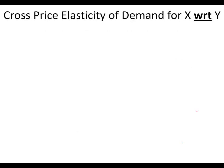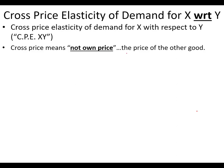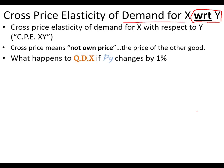The cross-price elasticity of demand for x with respect to y means that we have two goods, x and y. Cross-price means not the own price — if we just had price elasticity of demand for x, that would involve a percentage change in the price of x and the quantity demanded for x. But cross-price means not the own price, so if it's not x, that's why we have the other good y. With respect to y, we look at how y's price changes and the quantity demanded for x. What happens to the quantity demanded for x if the price of y changes by 1%?